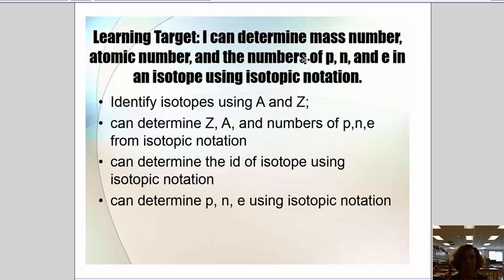This target: I can determine mass number, atomic number, protons, neutrons, electrons, and isotopes. We're going to identify our isotopes using A and Z. So we're going to determine A and Z plus numbers of protons, neutrons, and electrons using isotopic notation.